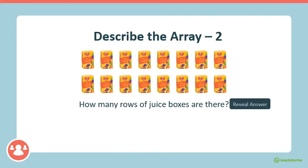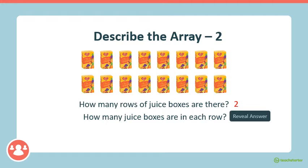Here's another array that we need to describe. How many rows of juice boxes are there? That's right, there's two rows of juice boxes. And how many juice boxes are in each row? That's right, there's eight juice boxes in each row. So there are two rows of eight, or two multiplied by eight.